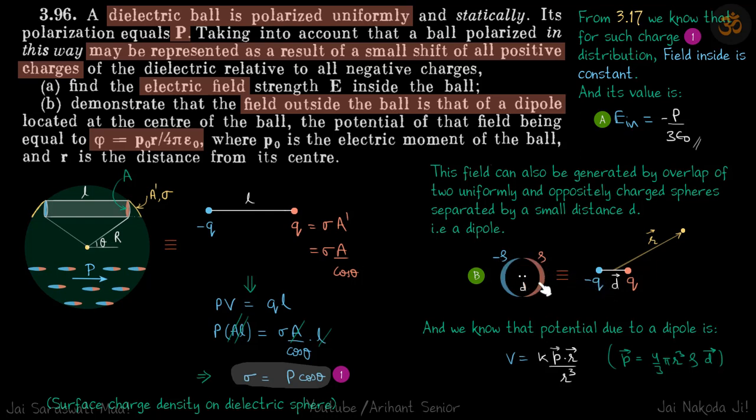So all that positive charge can be concentrated on this point and all the negative charge can be concentrated on this point. For all the external points this situation is similar to that of a dipole. So inside we cannot do that because inside the field is going to be constant. But for outside points all this positive charge can be concentrated here and all the negative charge can be concentrated here. So it's equivalent of a dipole which is what we needed to demonstrate.